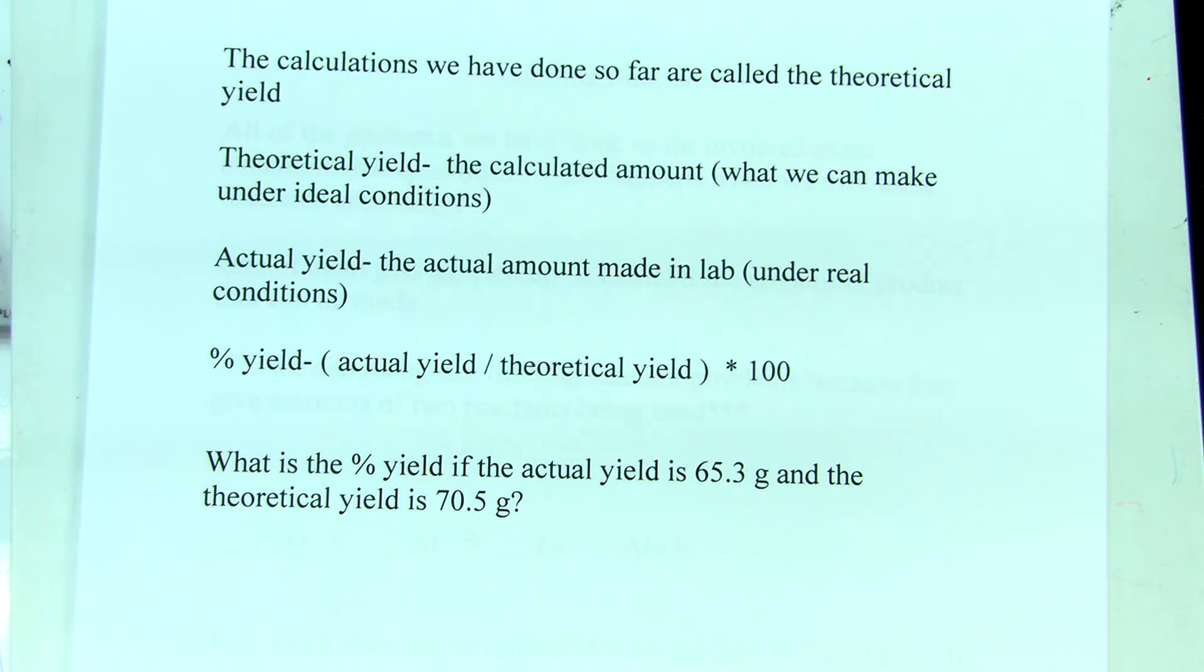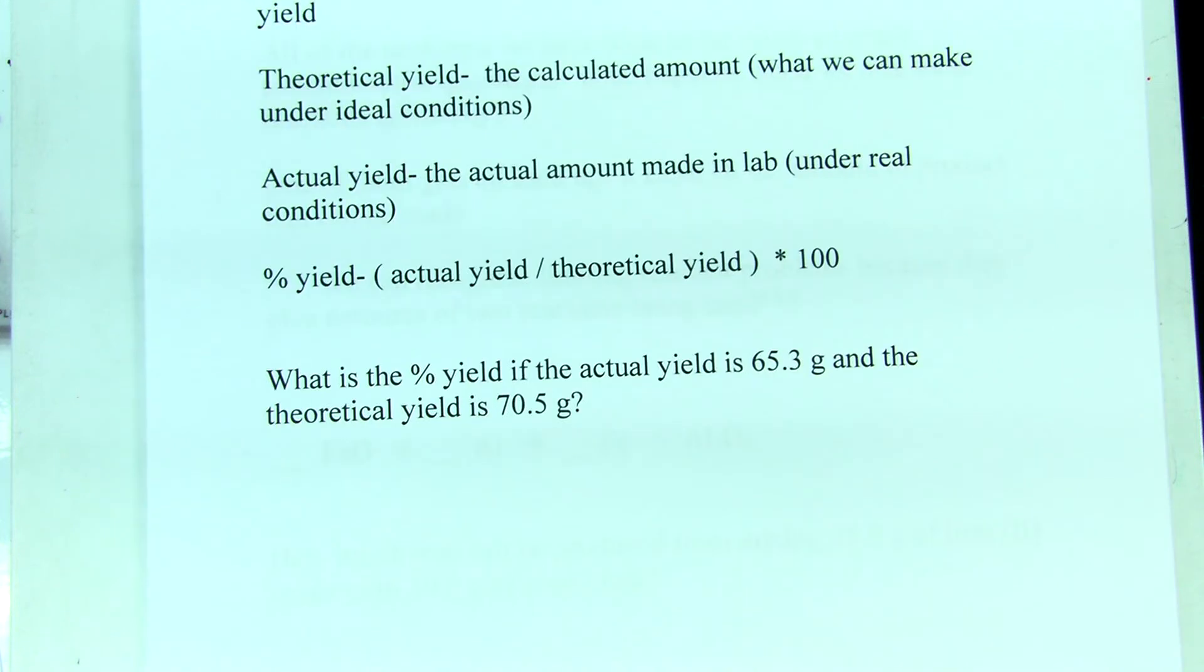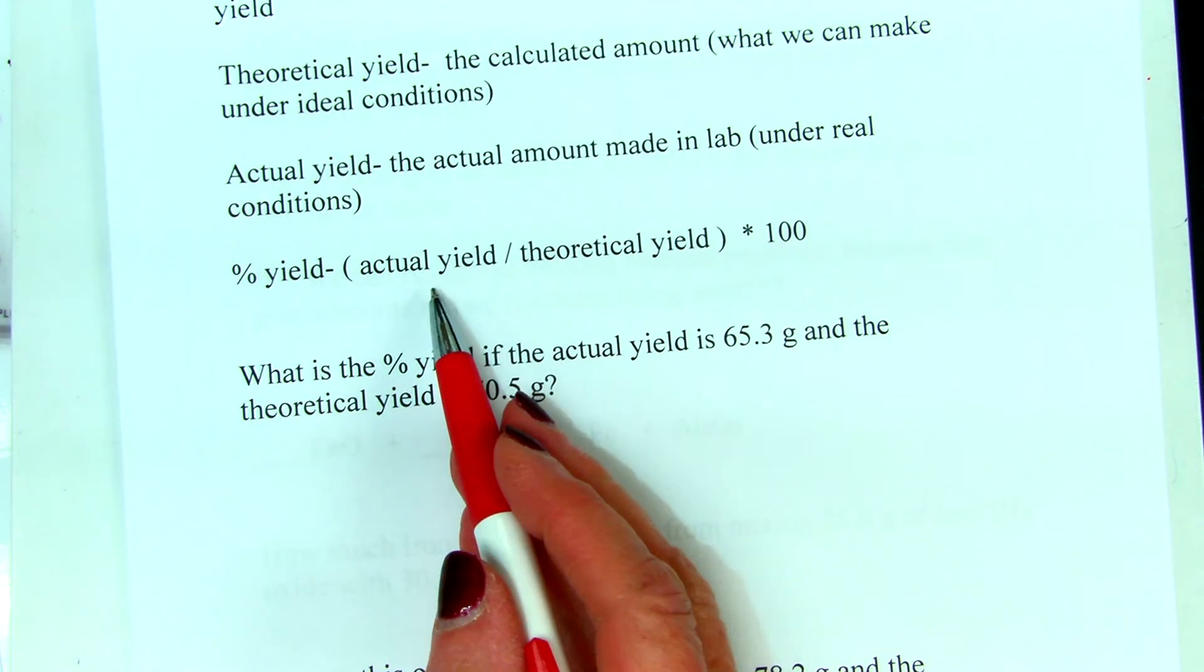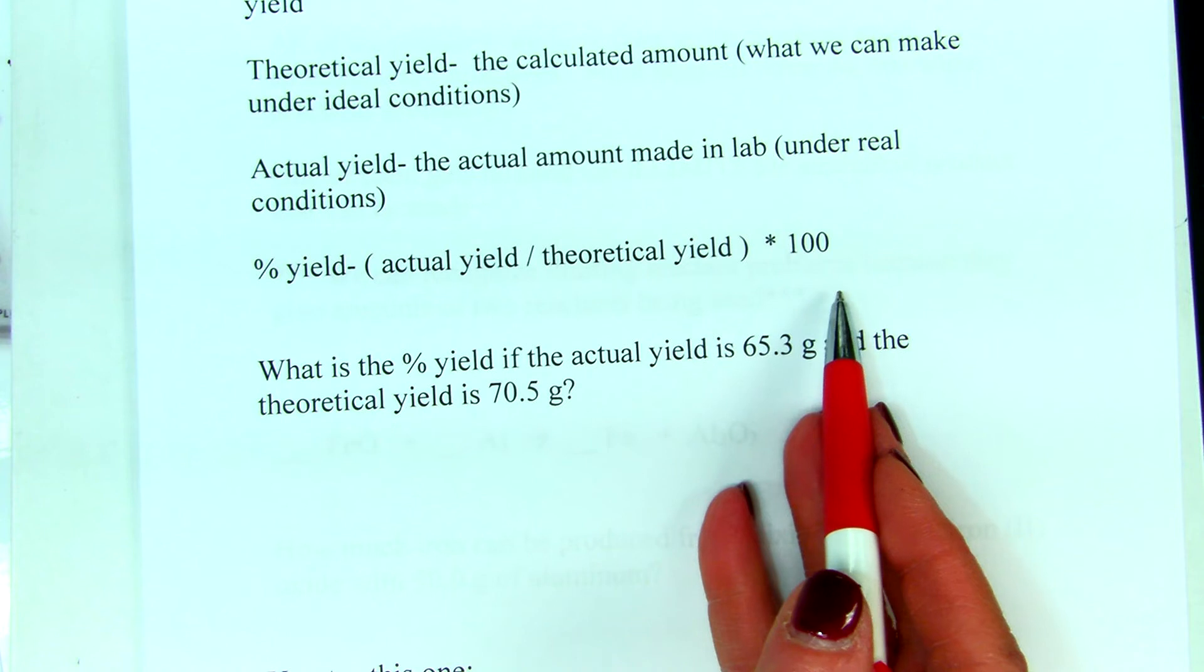The theoretical yield is what we calculate, then we go in the lab and we try and make something and we end up with what we end up with. That's called the actual yield, what we made under real conditions.